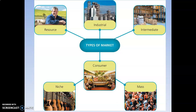Beginning at the top you have a resource market where basically you're selling raw materials. An industrial market where you're selling to manufacturers. An intermediate market which is basically like warehousing, selling before it's distributed to the end user. And then consumer markets which is basically retail — either mass market where you can sell a large amount of goods like a shopping centre or a large supermarket, or a niche market where you're selling specialised goods and services, like for this example a music shop.